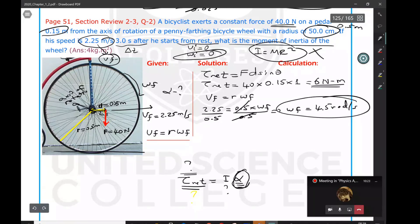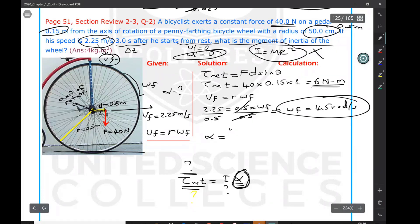Alpha is needed to calculate I. The definition of angular acceleration is α = (ω_f - ω_i) / Δt. Omega final is 4.5 rad/s, initial is zero from rest, delta t is 3 seconds. If we divide them, we will get the angular acceleration as 1.5 rad/s².